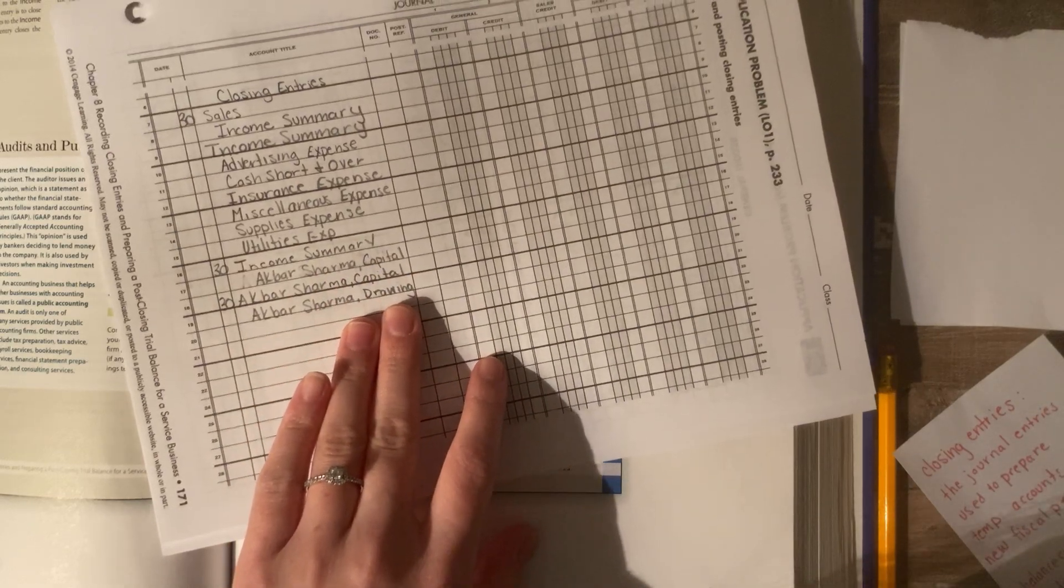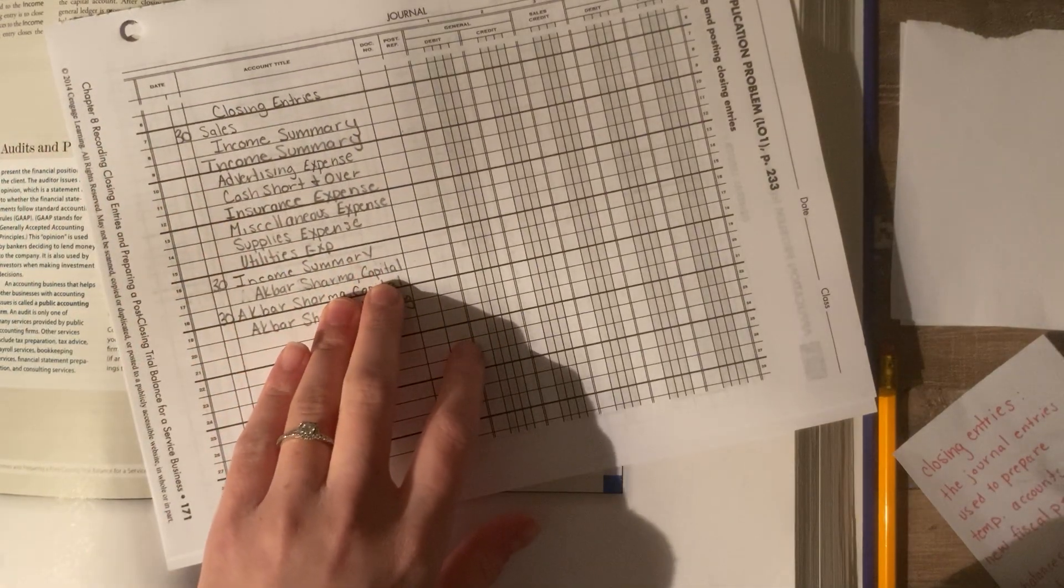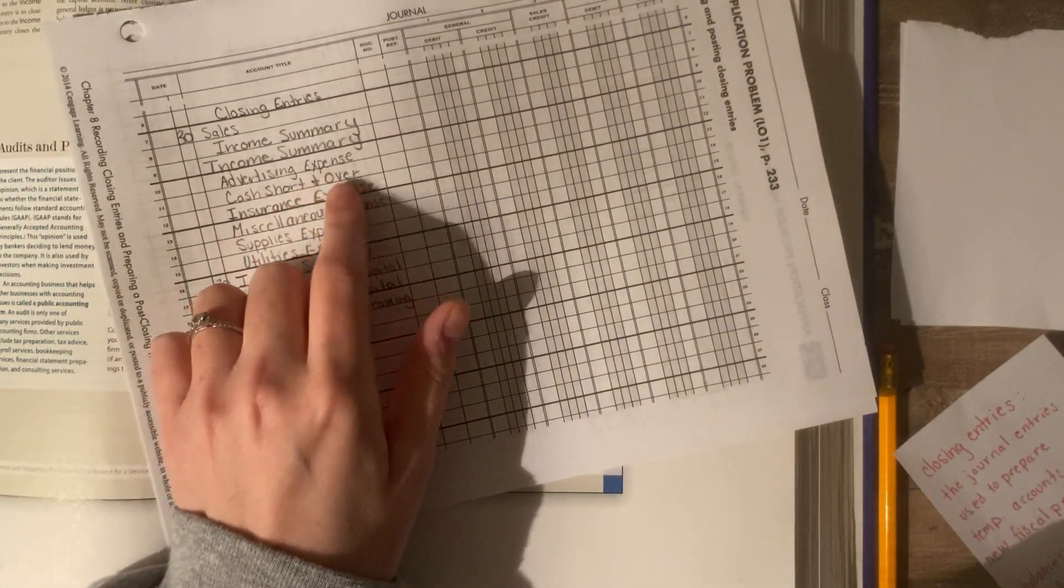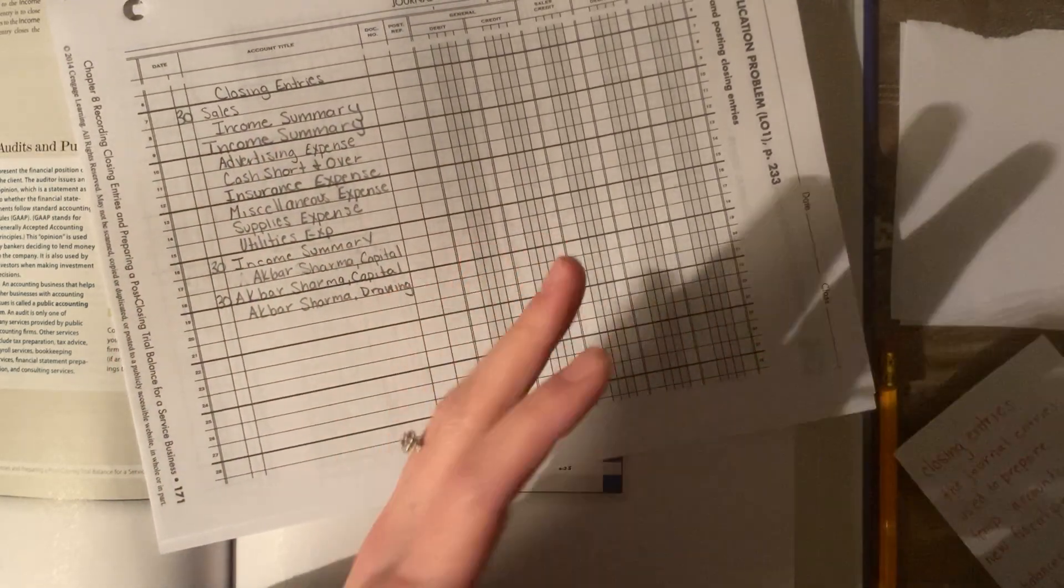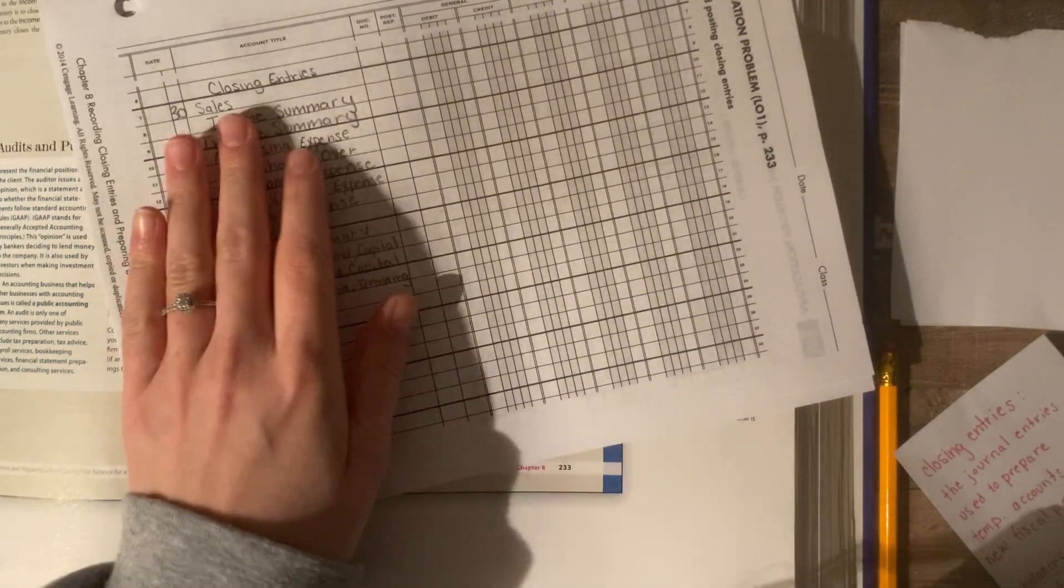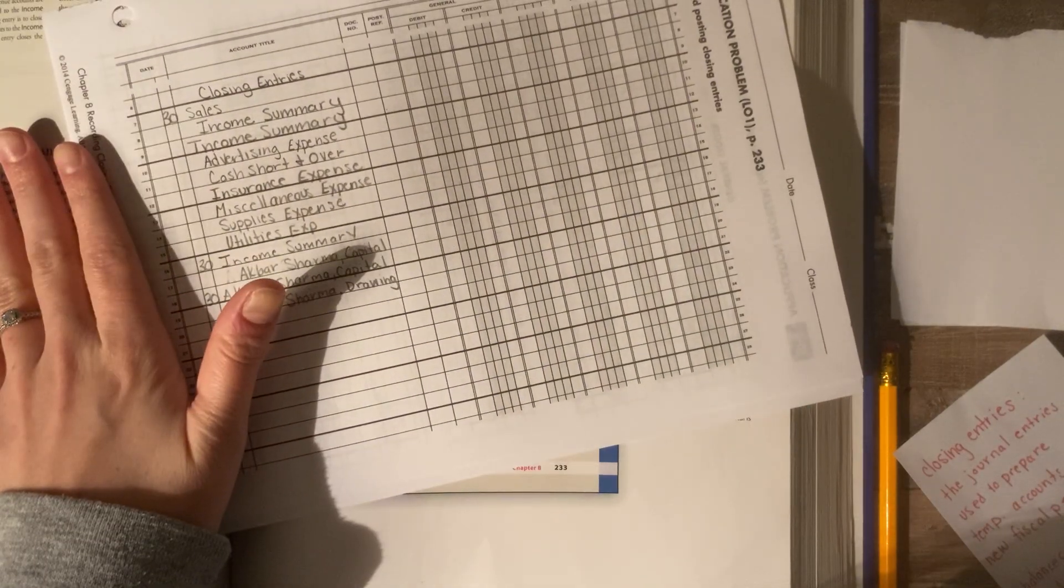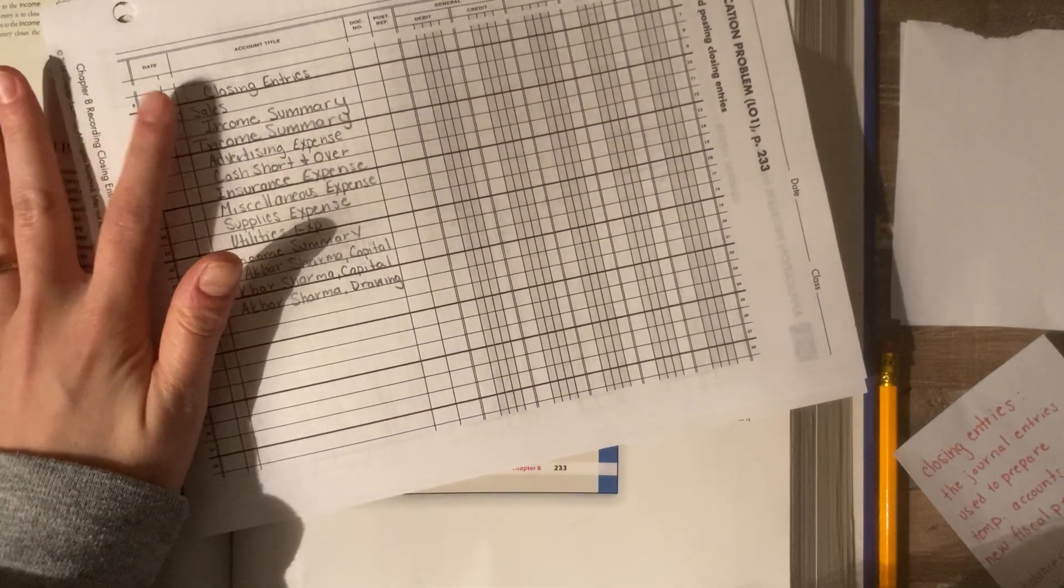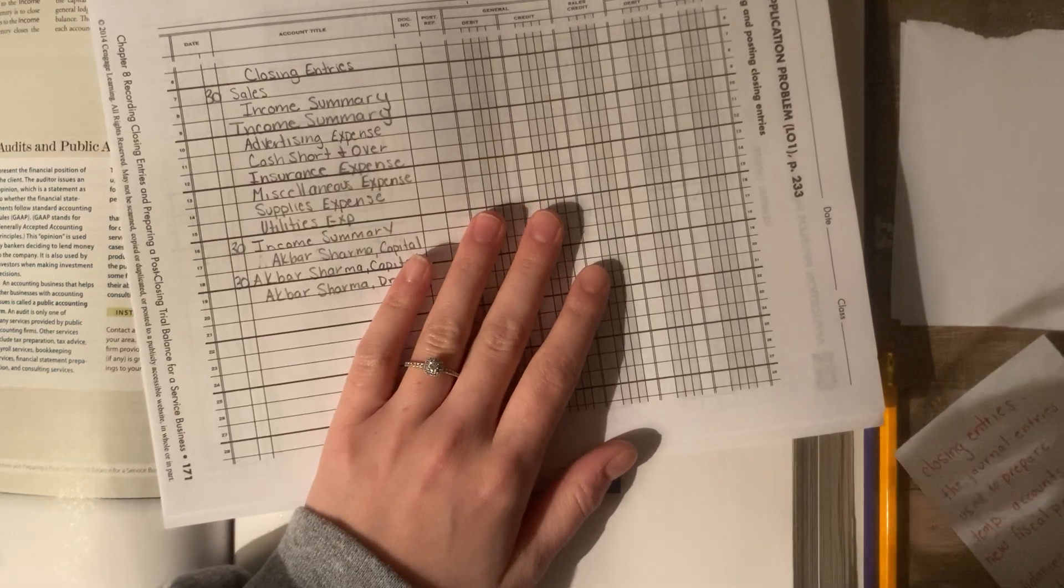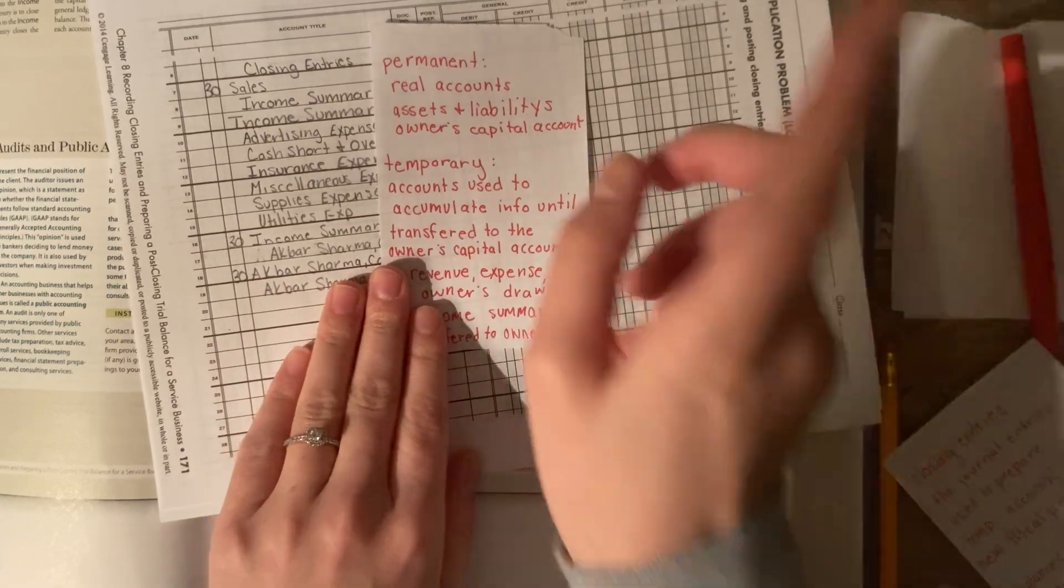And this way, we can close all the temporary accounts, see the final permanent accounts. But we also still have this information documented. We just don't want to carry it over into the new fiscal period come July. We don't want to carry over any of this information. We want to break this down to month by month by month. So, in June, we want to know how many expenses we had. Start fresh for July. Same thing in June. We wanted to know how much sales we had. And start fresh for July.